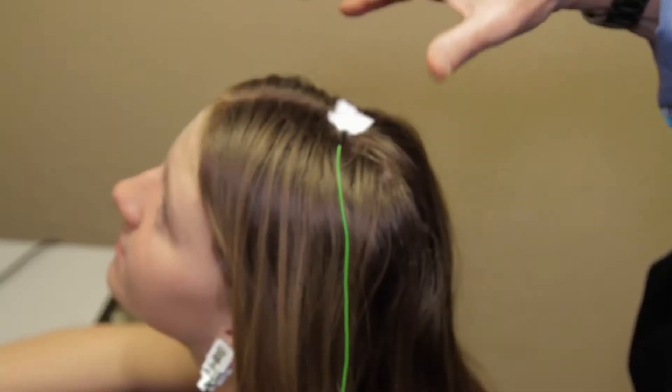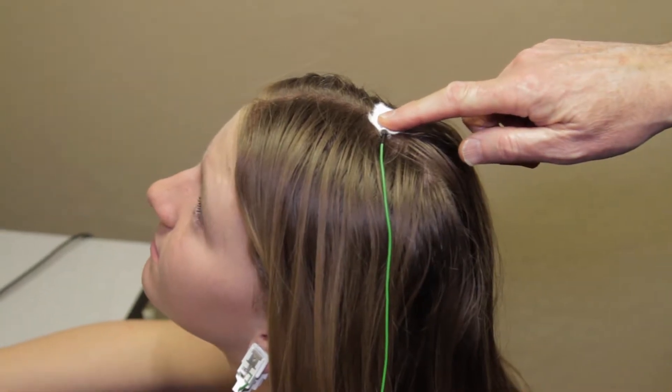Neurofeedback is measuring brain activity and teaching the person how to modify that so their brain functions more optimally. By putting a sensor or more on the scalp we can read the brain activity, project it onto a screen.